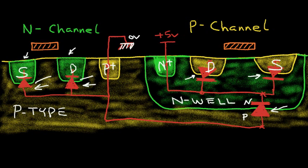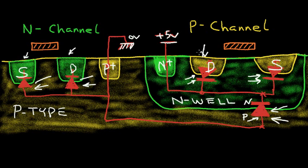These diodes will not become forward biased. In the P-channel, we will usually set the well at a high voltage — here we have set it to plus 5 volts. So the N-well to P-type substrate diode is reverse biased by 5 volts, and this diode will never become forward biased. We also never want the drain and source diodes to become forward biased. Therefore, we never want the P-regions of the P-channel to go above 5 volts, as forward biasing those diodes would cause serious problems.